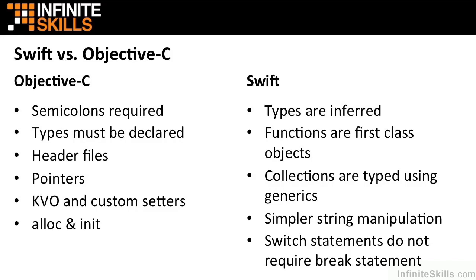In this video, we'll dig deeper into what those differences between Swift and Objective-C are. First, in Objective-C, semicolons are required. Many languages today have semicolons required. Swift eliminates this need.